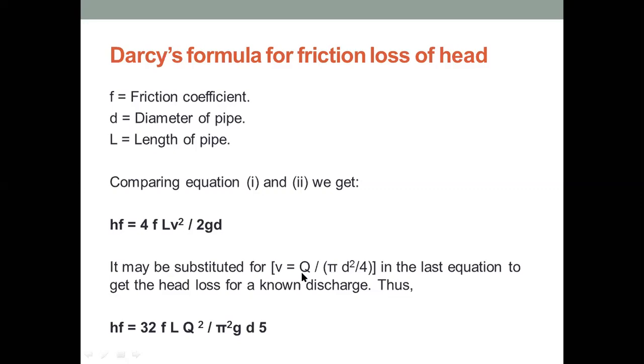Where we put V equal to Q by pi D squared by 4. That means V equals Q by A. And we put it to the equation of Darcy-Weisbach equation. Then we get HF equals 32F LQ squared by pi squared GD to the power 5. So we can write the Darcy-Weisbach equation in this format.